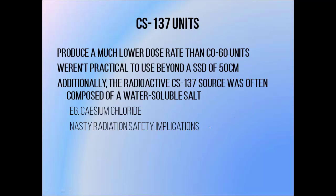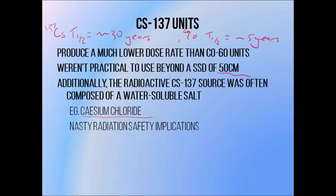Cobalt-60 isn't the only artificial isotope that's been used in teletherapy units. Cesium-137 has also been used, but much less often. This is partly because cesium-137 has a much longer half-life than cobalt-60 and therefore produces a lower dose rate, meaning these units had to be positioned much closer to the patient to be practical — not really used at source-to-surface distances above 50 cm, whereas cobalt-60 units were routinely used at distances of 80–100 cm. A much bigger problem with cesium units is the actual composition of the source: cobalt-60 sources tend to be made of little lumps of radioactive metal, whereas cesium-137 sources are made of water-soluble salts such as cesium chloride. A radioactive powder that can spread across a large area and soak into things like the ground and the human body is a huge radiation safety issue that can contaminate huge areas of land.